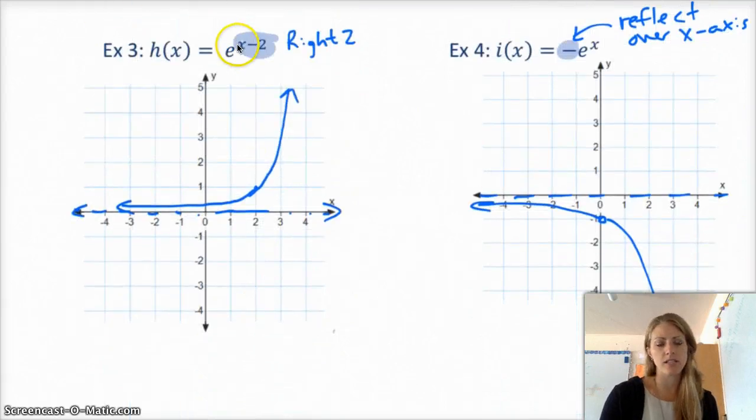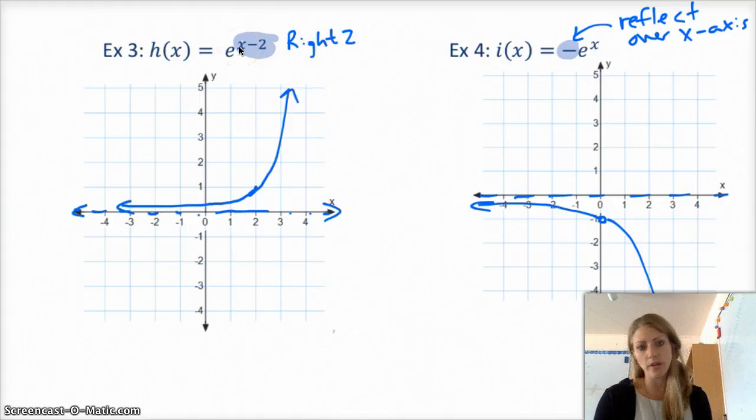H of x just has the x minus 2. The minus 2 only affects x, so it's right 2, horizontal. So, I just took that point, 0, 1, and I moved it over two spots, and then I just kind of, you know, kept my asymptote the same.